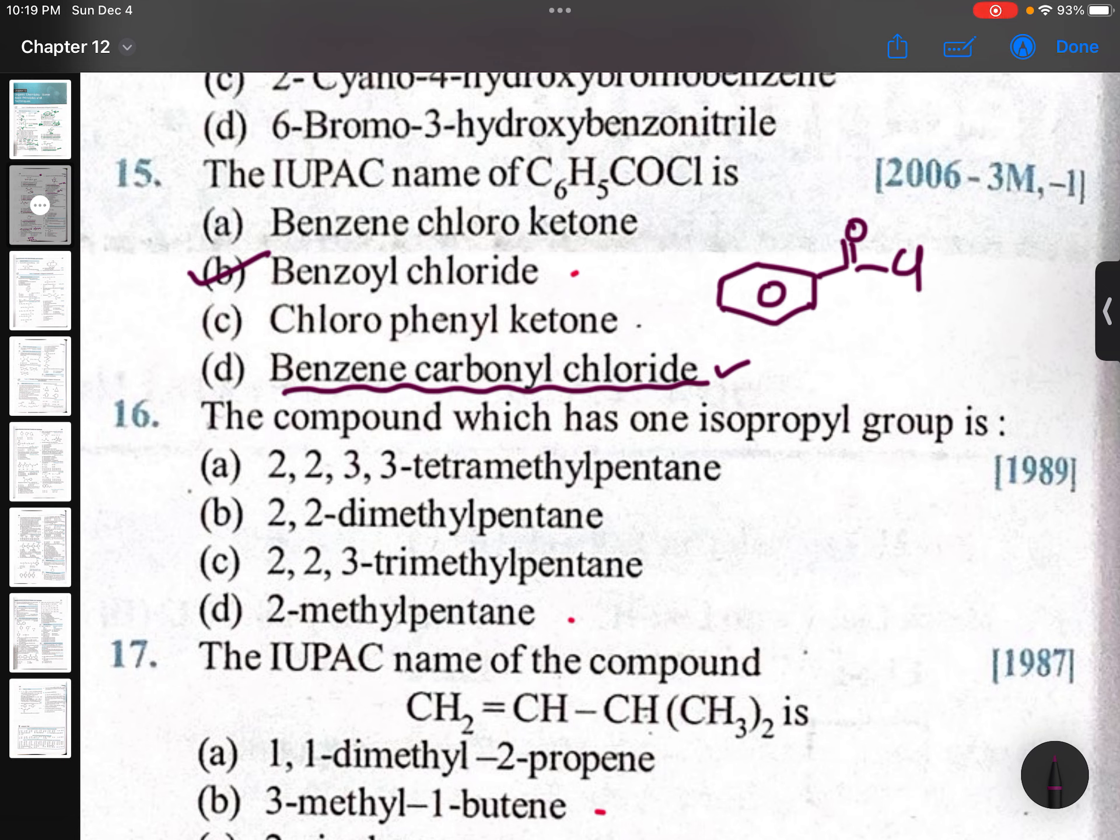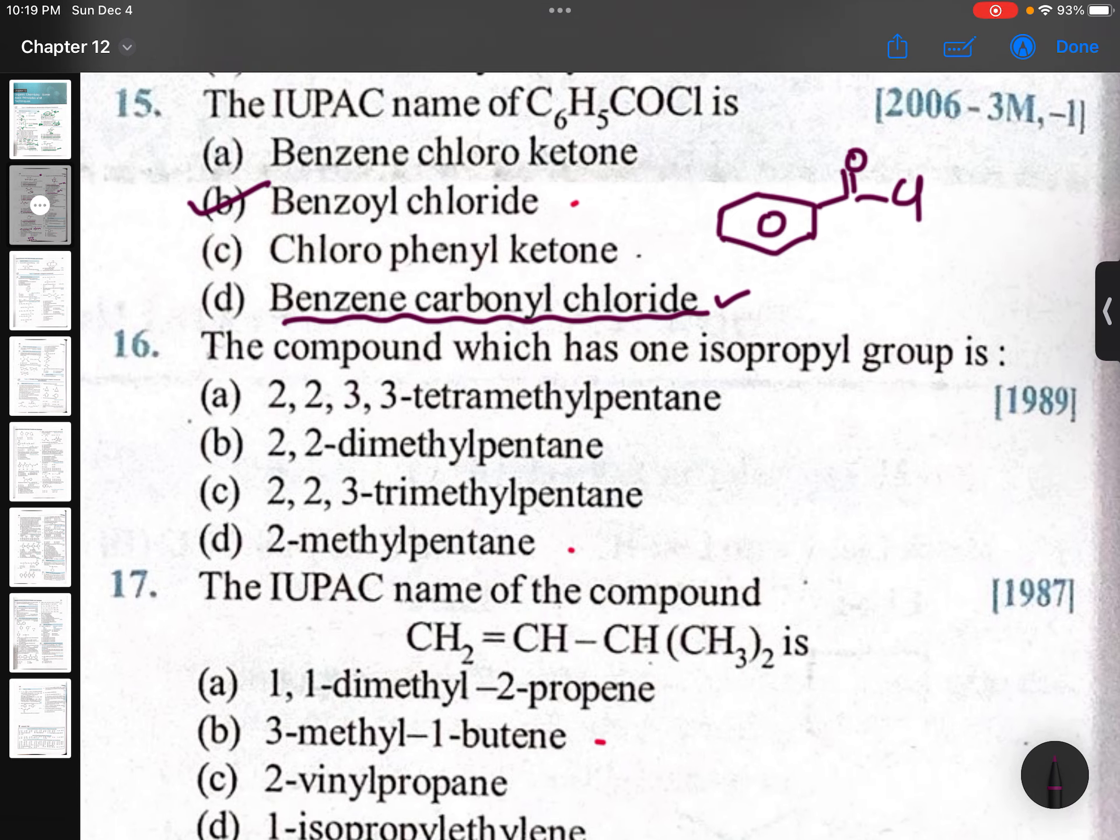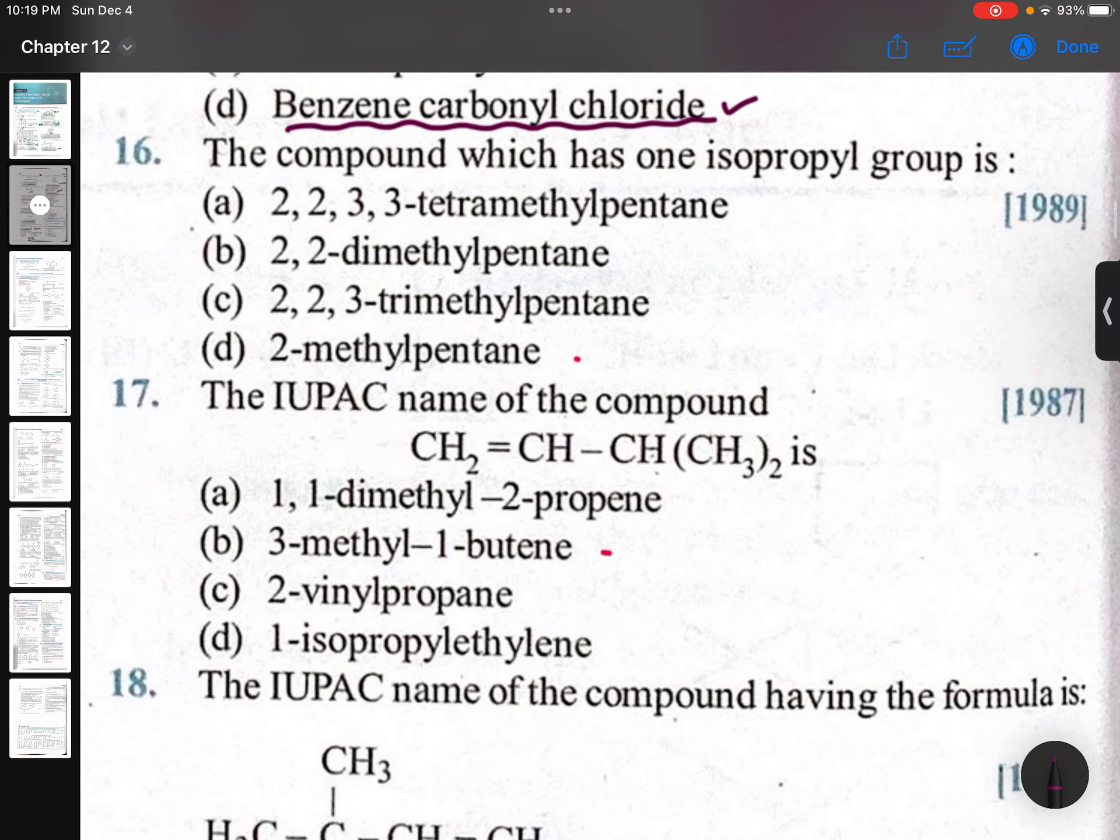The compound which has one isopropyl group. Isopropyl group means CH3-CH-CH3 - this group should be there. And if you see 2-methyl pentane, you can see that group - only one.